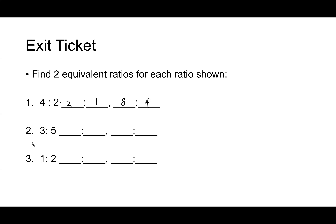An equivalent ratio for three to five — what's one, Charlie? Nine to fifteen — we multiplied both terms by three. What else, Tyler? If we multiplied both by five it would be fifteen to twenty-five.